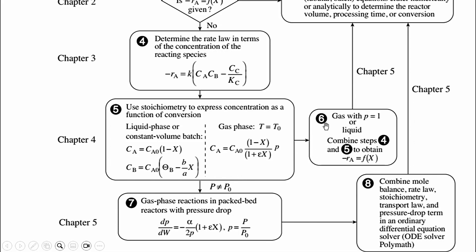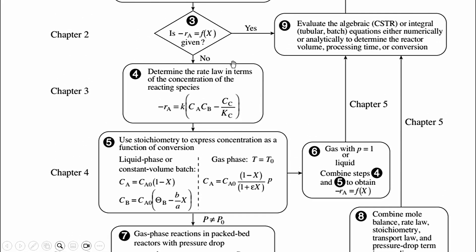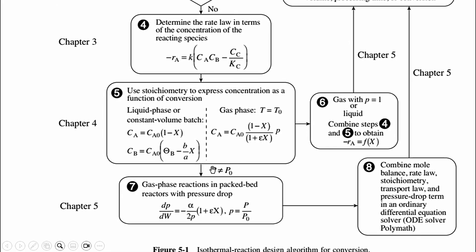Moving to step number six: gas with P=1, that if there is no pressure drop in the system, then what we need to do? We need to go to step number six: gas with P=1 or liquid, combine steps four and five to obtain minus RA as a function of X. Why we came to step 4 and 5? Because minus RA was not equal to function of X, so using 4 and 5, we got to this point, the yes point, and accordingly we move to step number nine.